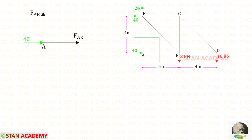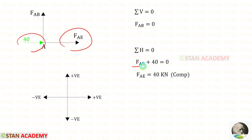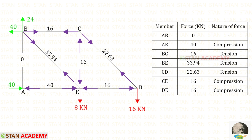Now we are going to make the fourth and last section. We can make the section like this, and I am going to take the left side and do the analysis. Applying sigma V equals 0, we find FAB, which is 0. FAE we have already found, but I wanted to calculate it one more time. Applying sigma H equals 0, both forces are acting towards the right side, so both are positive. Finally, for FAE, we will get 40 kN, which is compressive. Here I have tabulated all of the forces. Now we are going to end this session. Thank you for watching this video.